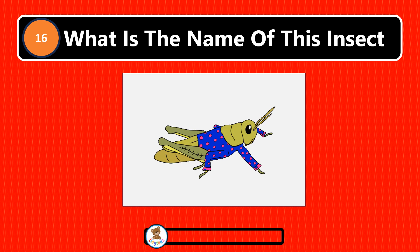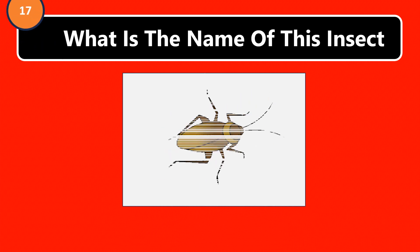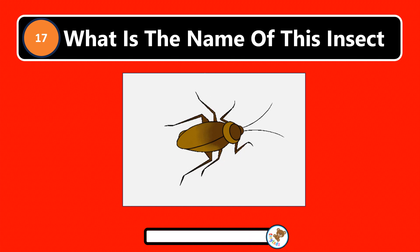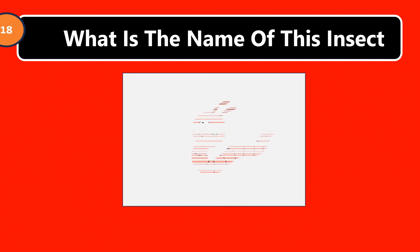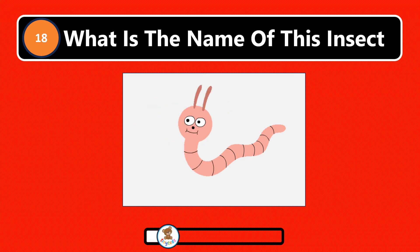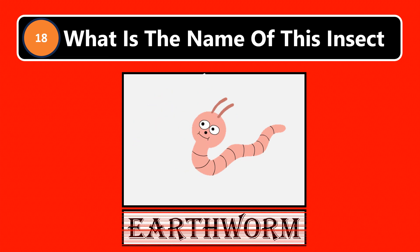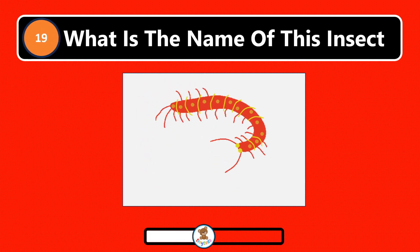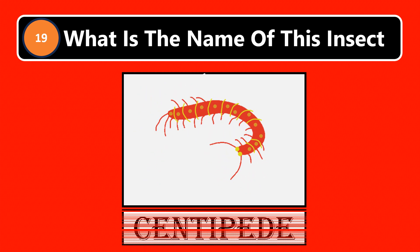Cricket. What is the name of this insect? Cockroach. What is the name of this insect? Earthworm. What is the name of this insect? Centipede.